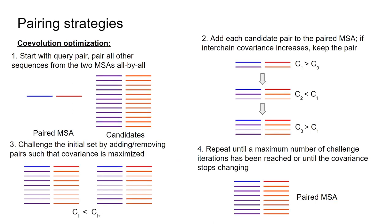Another method is naive coevolution optimization. We take all member sequences from two alignments, pair them all-by-all, then iteratively add pairs to the alignment, checking if it increases interchain covariance. We build a paired alignment, then challenge the set by adding or removing pairs to maximize covariance in the final paired multiple sequence alignment.